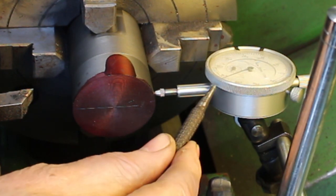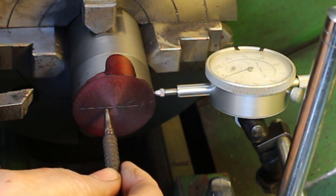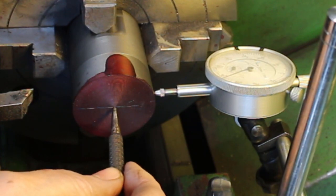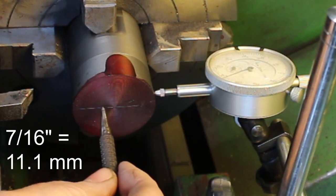So on the DTI we've got to get twice the offset that we're looking for. So we want 7/32s or 5.5mm, which means we're looking at 7/16s on the dial or 11mm.